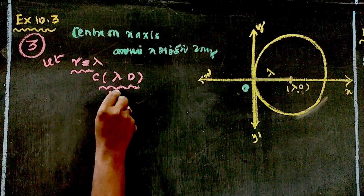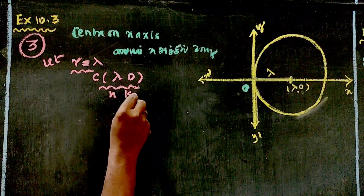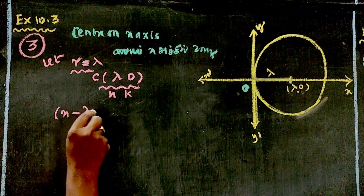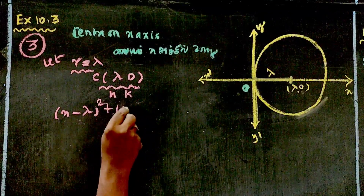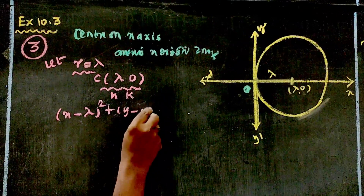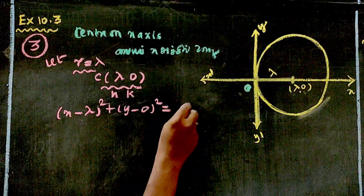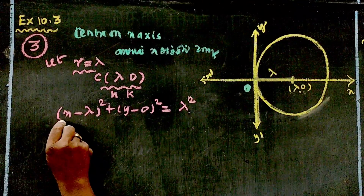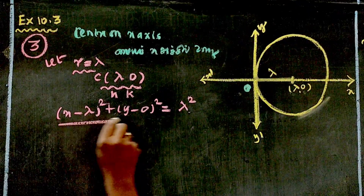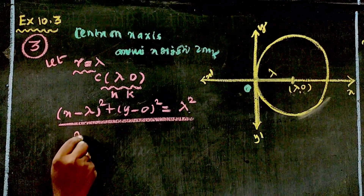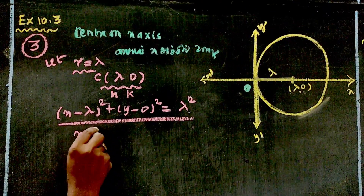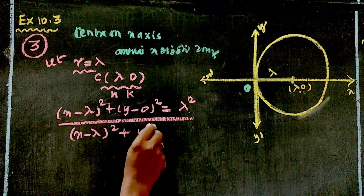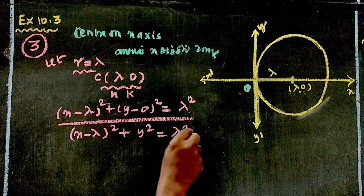Using the standard circle equation with center (h, k) and radius r: (x - h)² + (y - k)² = r². Substituting h = λ, k = 0, r = λ, we get: (x - λ)² + y² = λ². This is the equation of the circle.